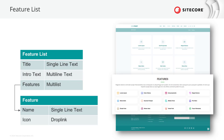The last component I want to create is the feature list. I follow the pattern of the client teaser, meaning we have a parent list component that has a title as a single line text field, an intro text as multi-line text field, and features as a multi-list that references single feature items containing a name as single line text and an icon as drop link. We will have to create the icon data sources as well.